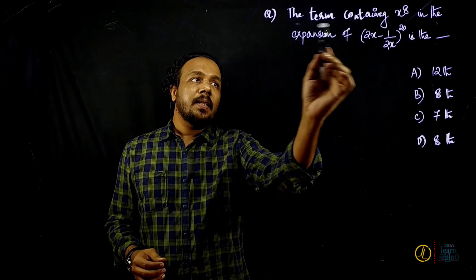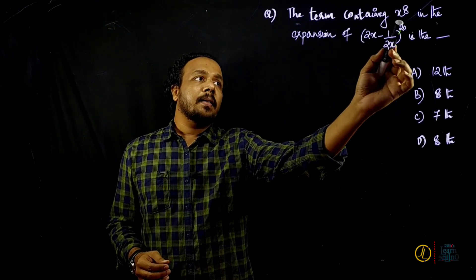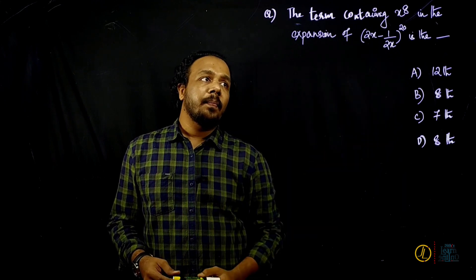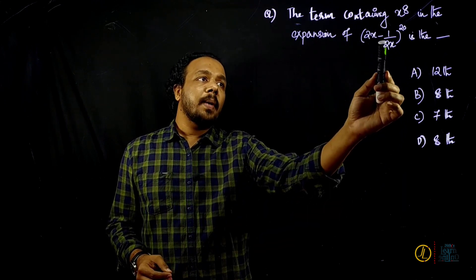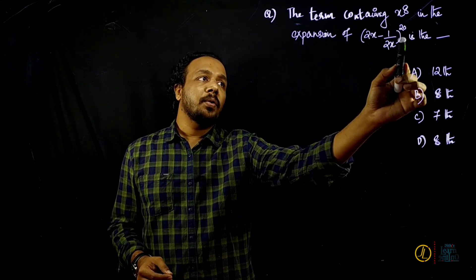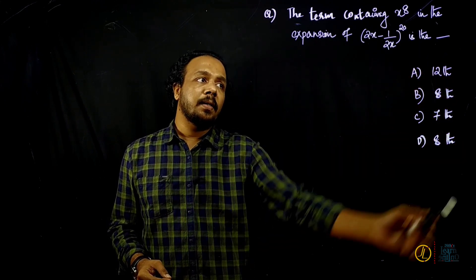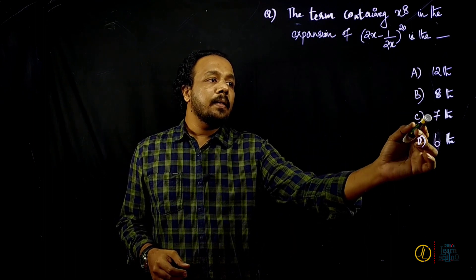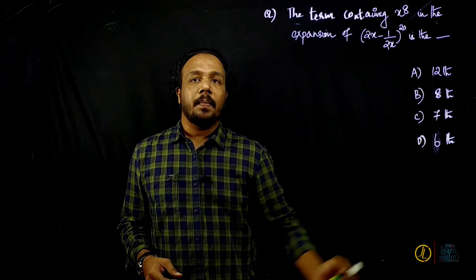The term containing x raised to 8 in the expansion of (2x minus 1 by 2x) all raised to 20 is the blank. The options are: 12th, 8th, 7th, or 6th.